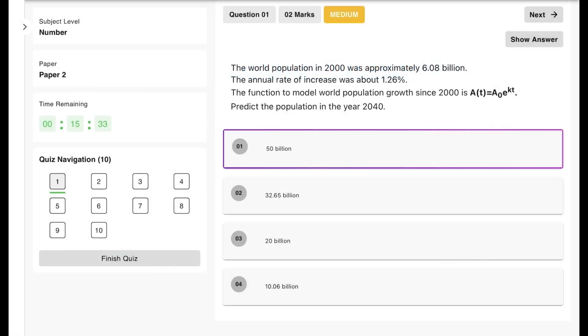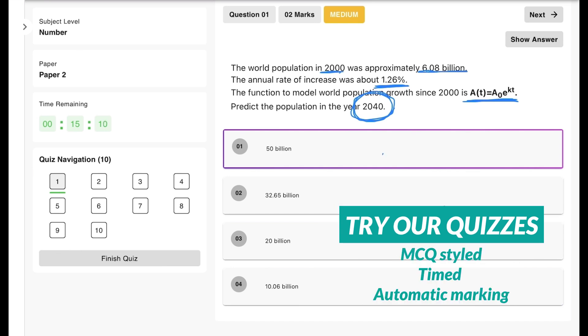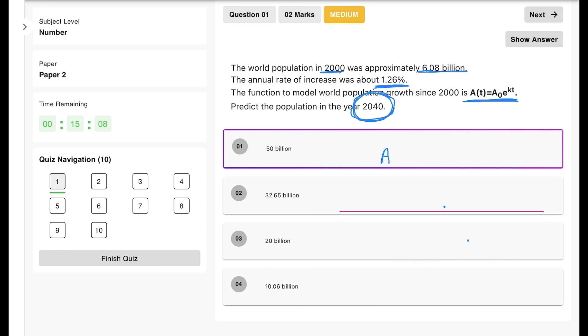We're going to finish off with some questions. The world population in 2000 was approximately 6.08 billion. The annual rate of increase was 1.26%. The function to model the world population is given as this. Predict the population in 2040. So basically from this equation we can see that we want to find A of 40 because we want to find the function 40 years later.